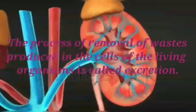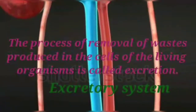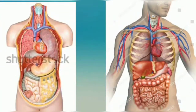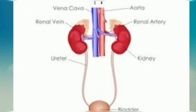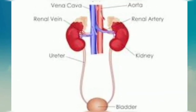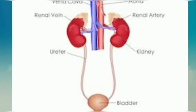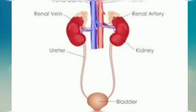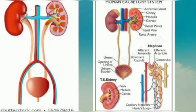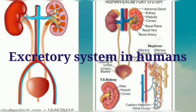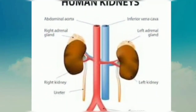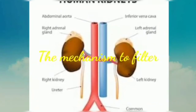The parts involved in excretion form the excretory system. The waste which is present in the blood has to be removed from the body. How can this be done? A mechanism to filter the blood is required.